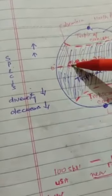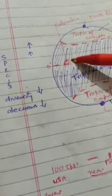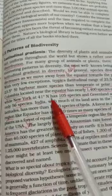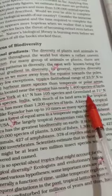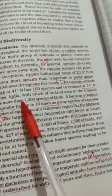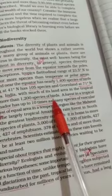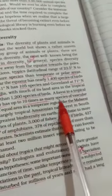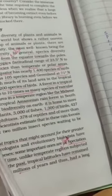For example, Colombia, which is situated near the equator, has 1,400 species of birds. Whereas New York, which is at 41 degrees north, has only 105 species. And Greenland, at 71 degrees north, has only 56 species. So you can see the change from 1,400 down to 56. Similarly, India in the tropical latitude has 1,200 species of birds. And a forest in a tropical region like Ecuador has up to 10 times as many species of vascular plants as a forest of equal area in a temperate region like the Midwest of the USA.